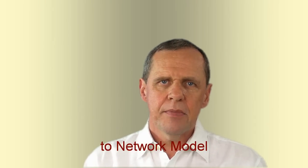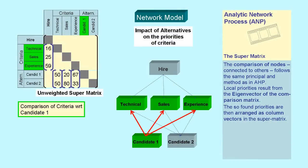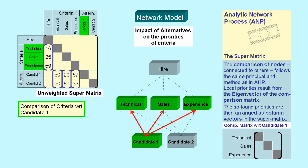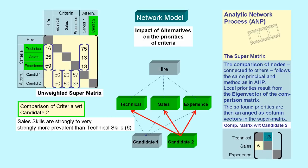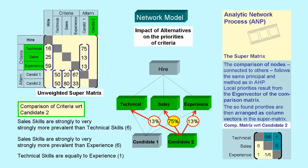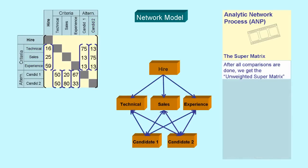To change from a hierarchical model to a network model, we will now take into consideration the impact of alternatives on the importance of criteria. First, we compare the recruitment criteria with respect to candidate 1. His outstanding qualities are the technical skills. Candidate 2 convinces with his sales skills. Arranging the corresponding weights in the supermatrix, we get the unweighted supermatrix of the network model.